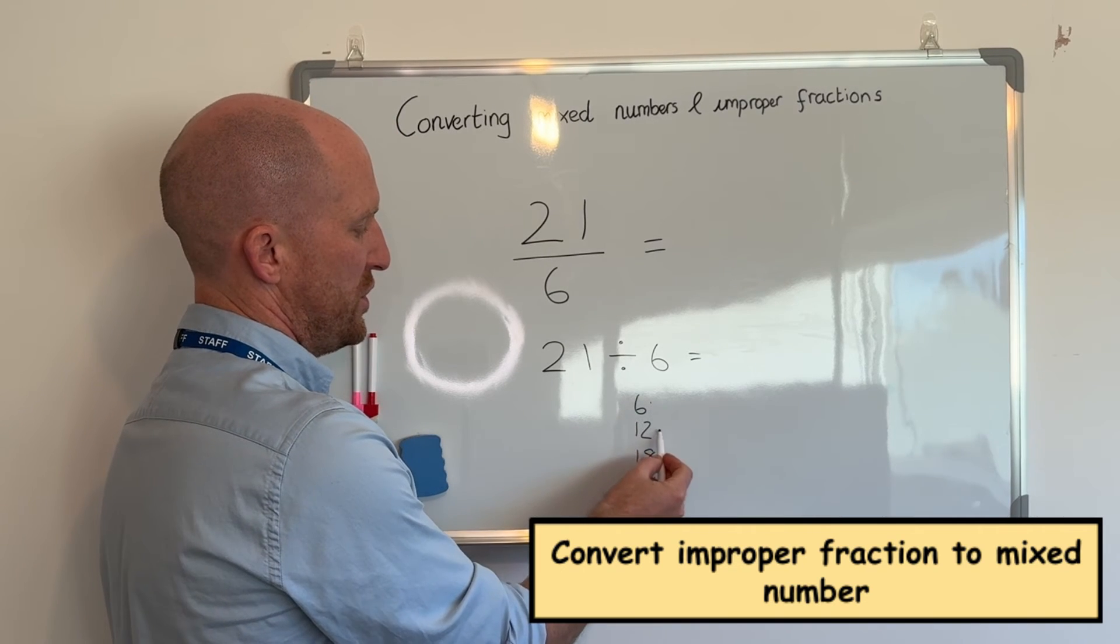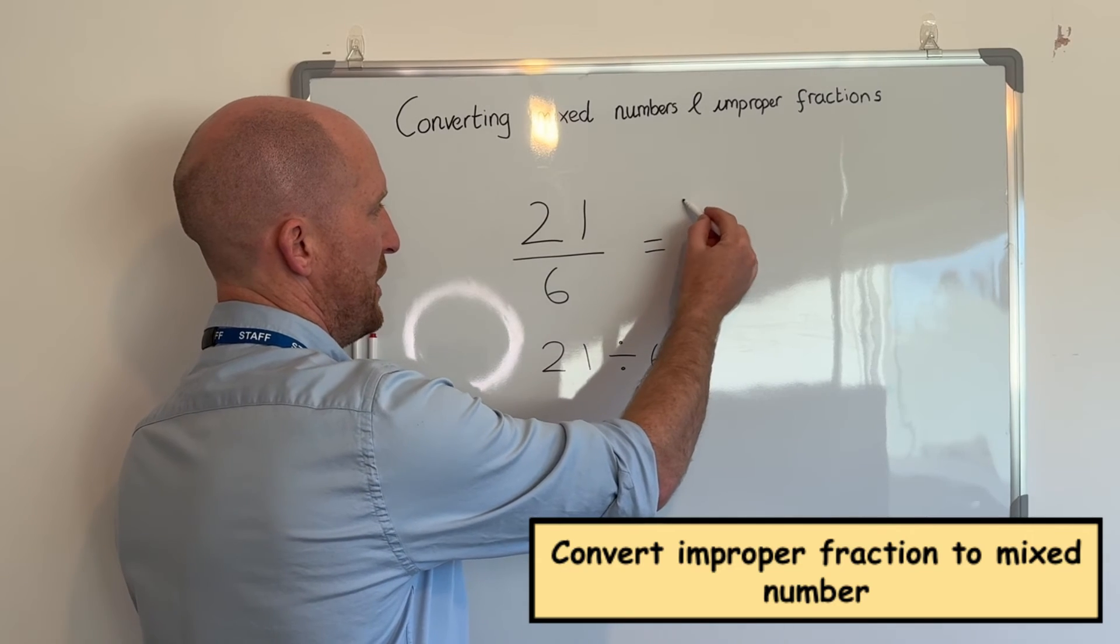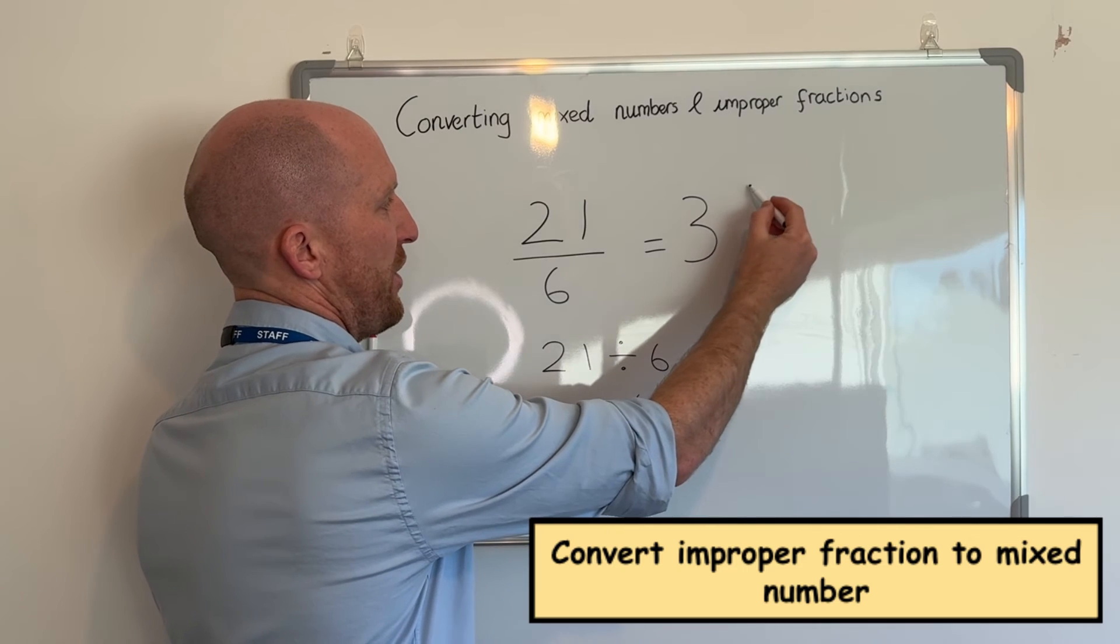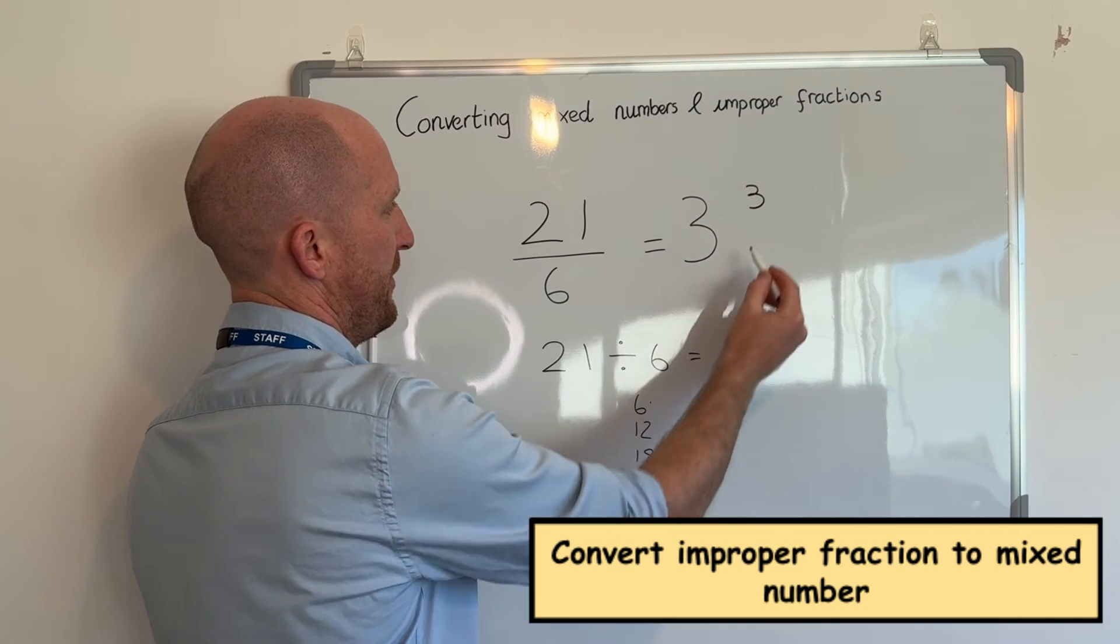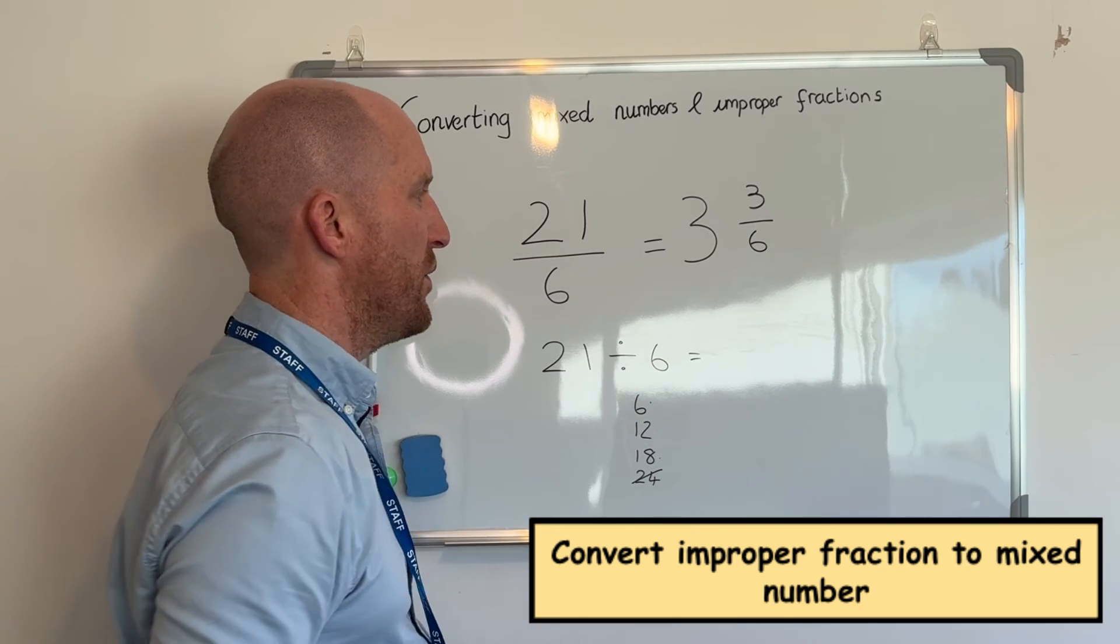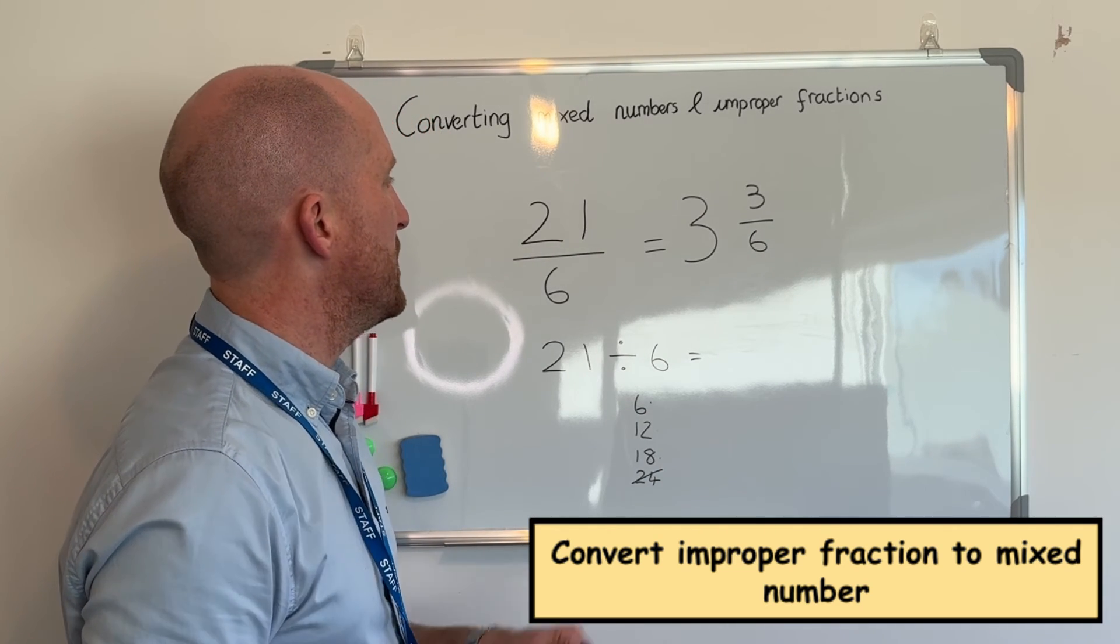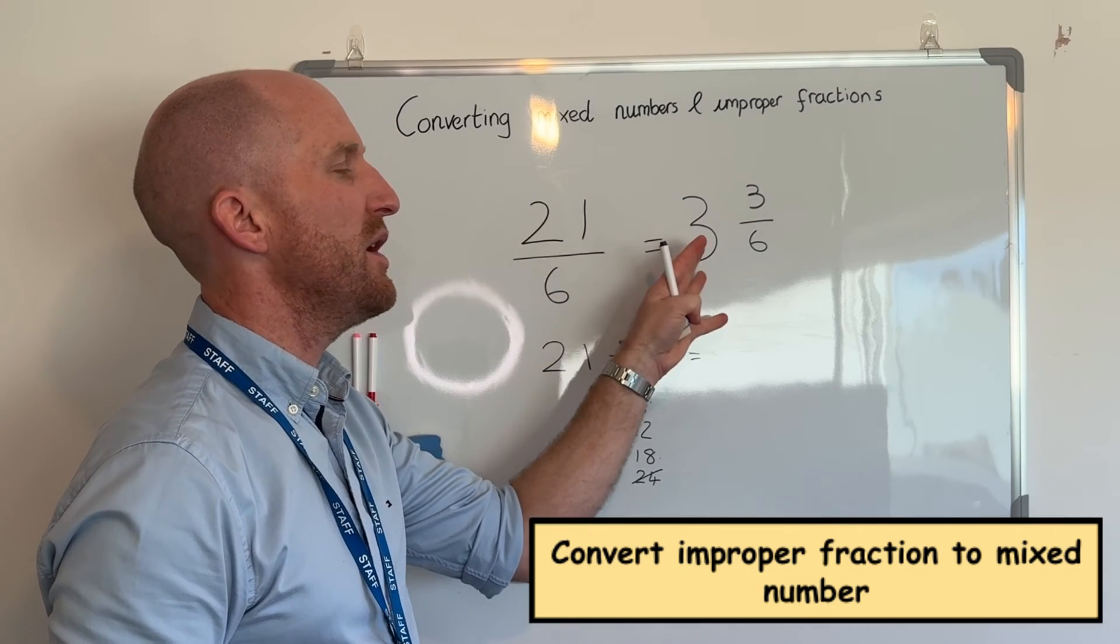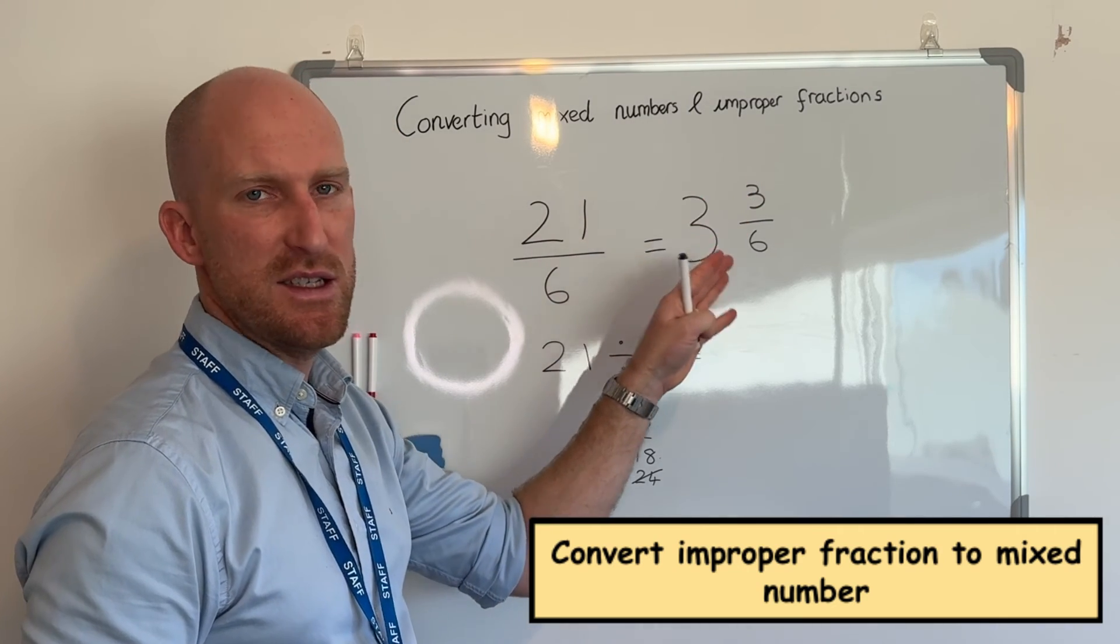There are three sixes in twenty-one and there is three remainder, and the denominator was six so that will always stay the same. So twenty-one over six is the same as three whole ones and three-sixths.